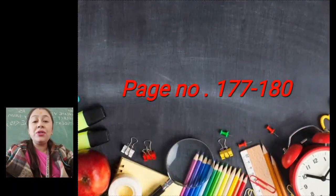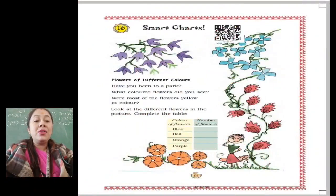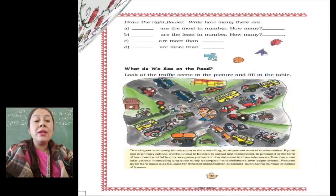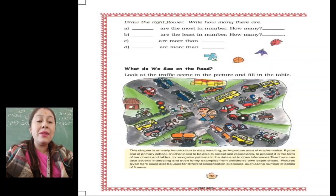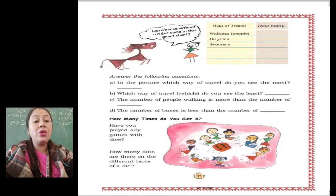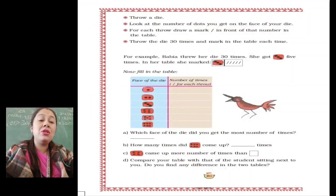Let us see briefly what we are going to do in today's class. We will solve exercises from page number 177 to 180. On page 177, flowers of different colors are given and you have to count and write the number of flowers according to their colors. The same question is at the top of page 178, and below there is a picture. This question about how many times you get six will be your home assignment, children — you will do this at home.